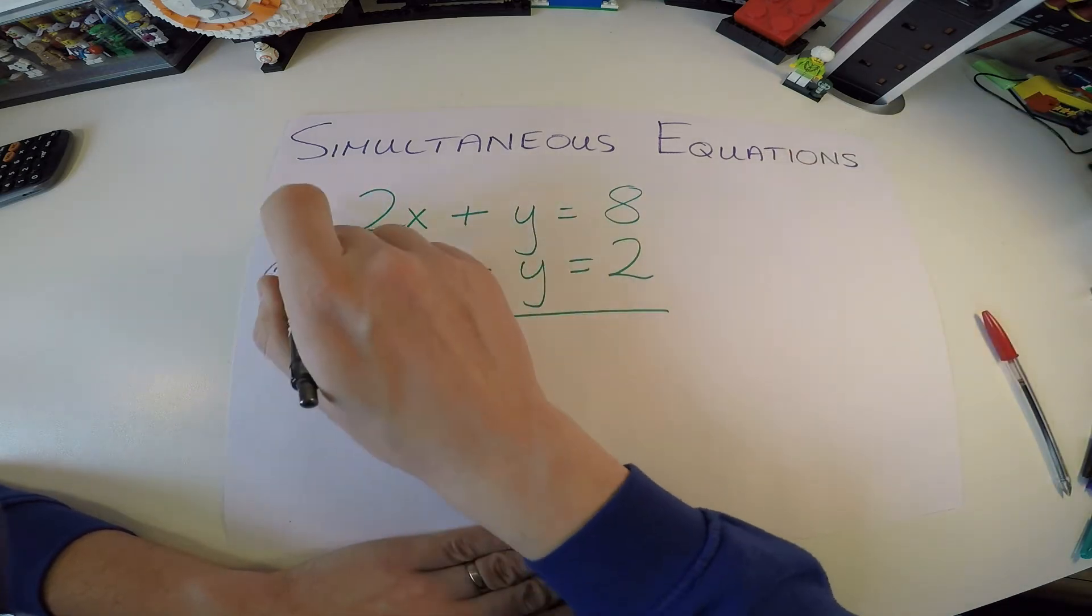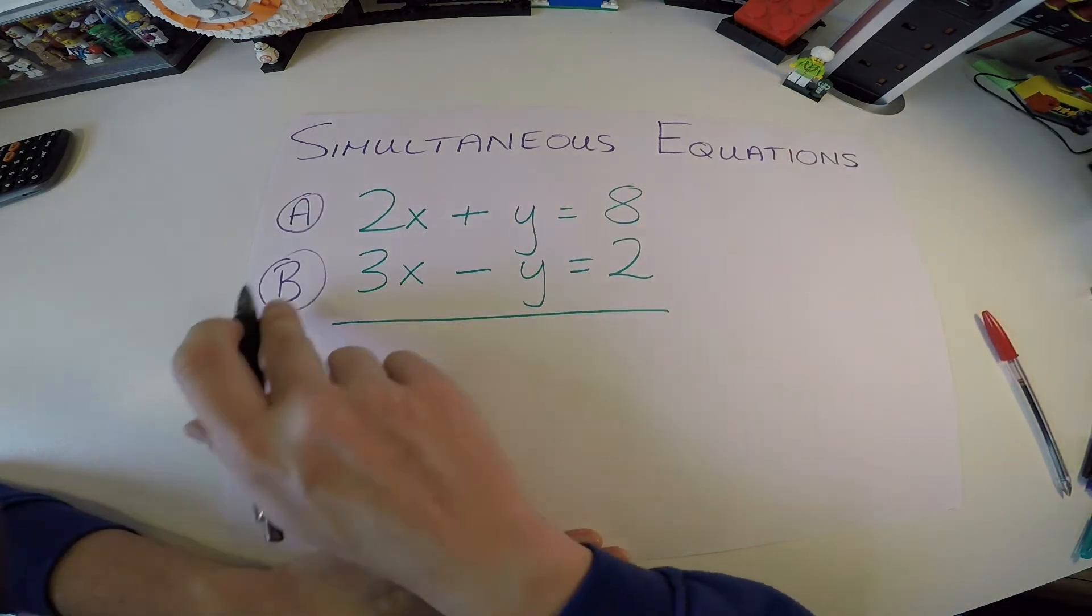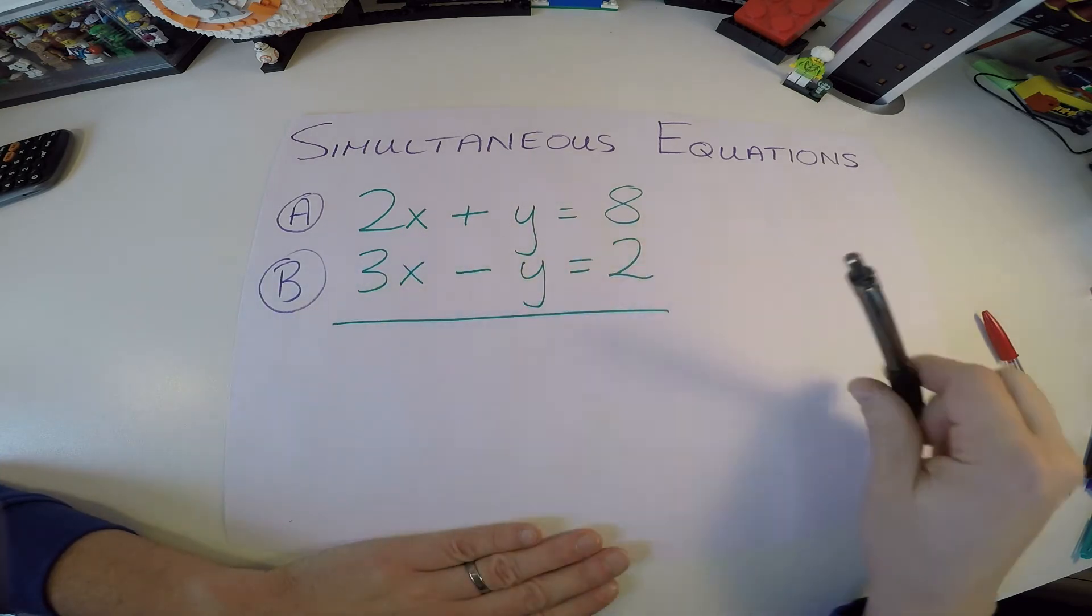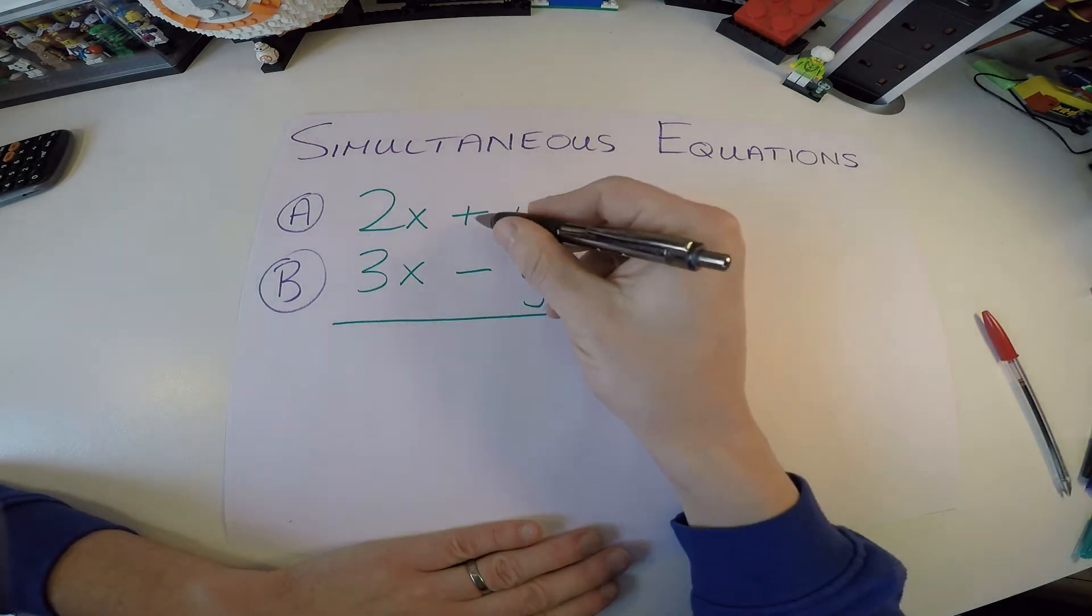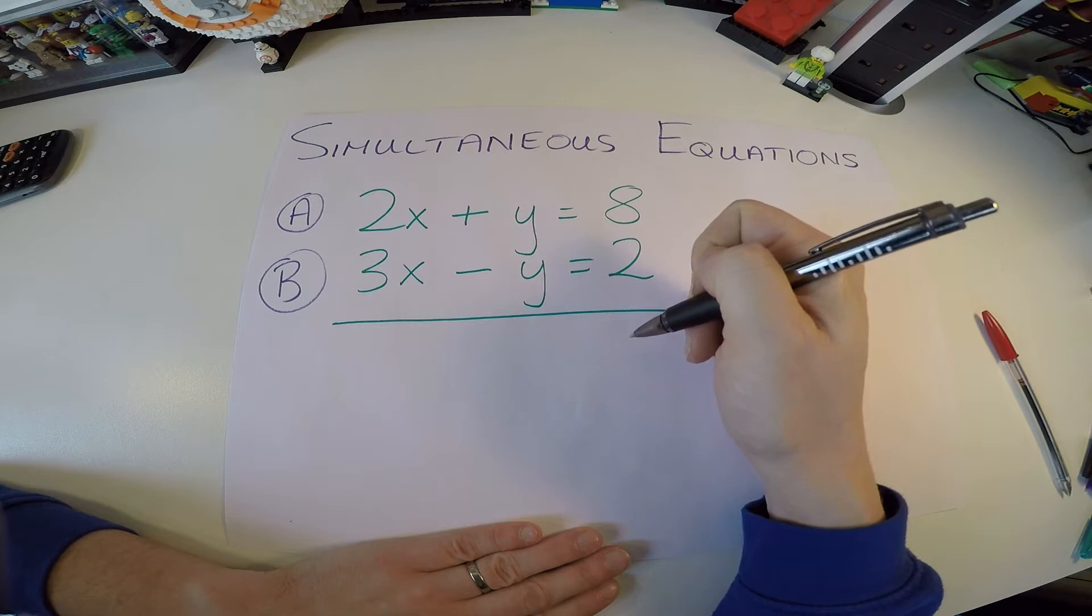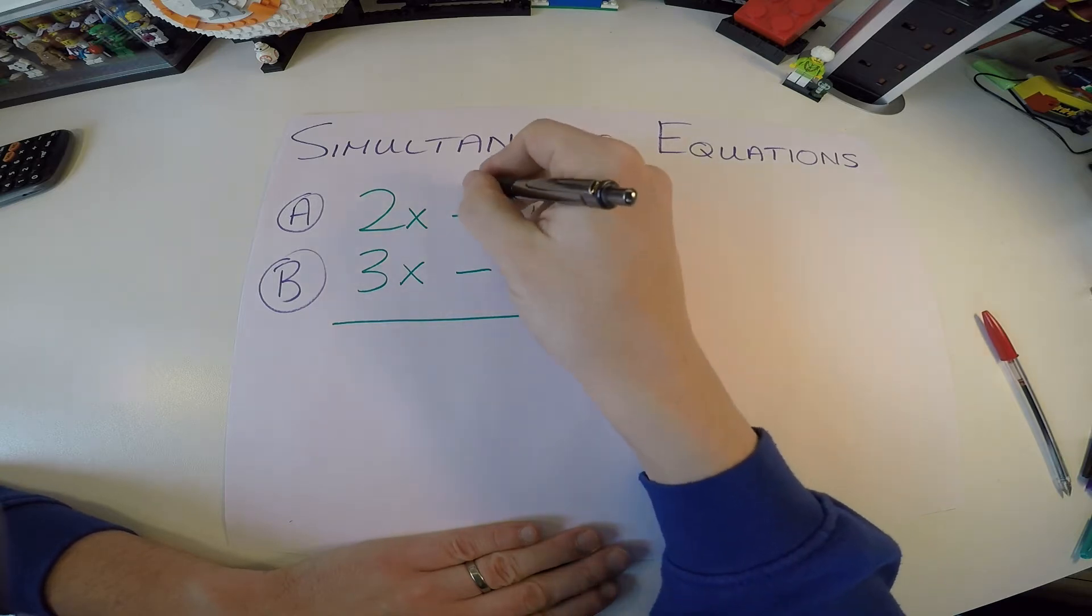Always label your two equations, a and b, like this. So we can see equation a and equation b. Now, what I want you to spot is that I have a plus y and a minus y. So plus y, minus y, well, they simply cancel.